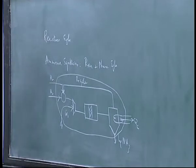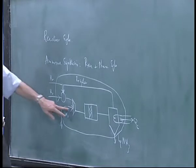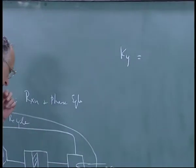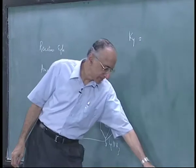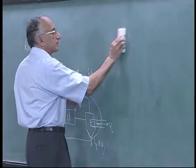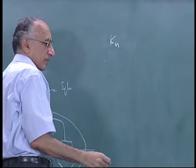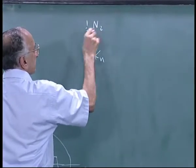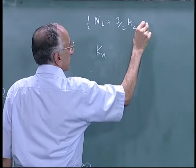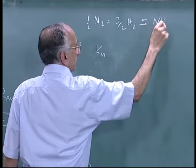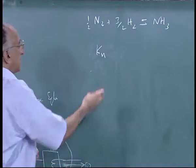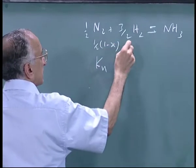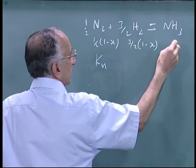So if you are doing an overall analysis of the process, first of all let me discuss these individually. As far as the reactor is concerned, we said KY is equal to, not KY, KN I think included the mole numbers. At equilibrium we had half into 1-X, this is 3 by 2 into 1-X and this is X.